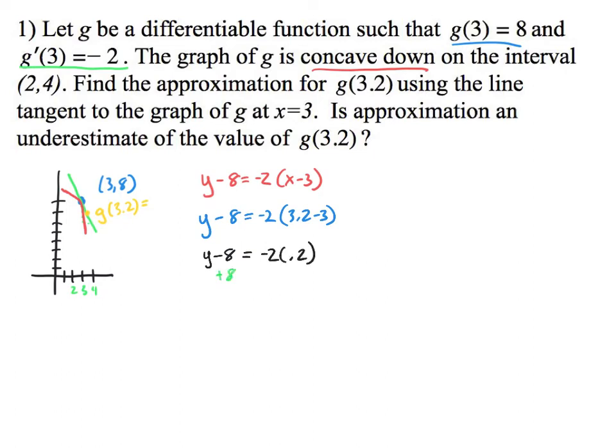And I crunch these numbers. So this is going to be y - 8 = -2(0.2). I'm going to add the 8 over. And I have y = -0.4 + 8, which in the end, this is really an approximation of g(3.2) is approximately 7.6.